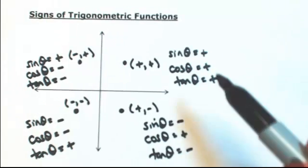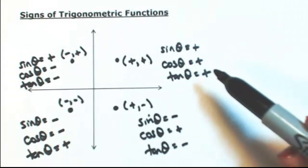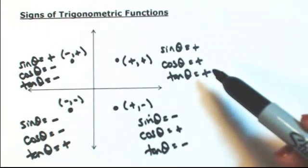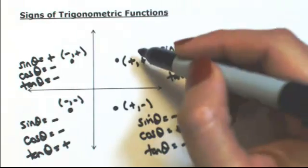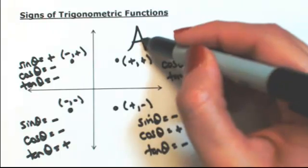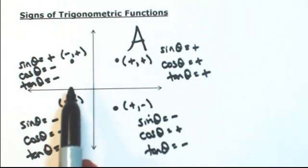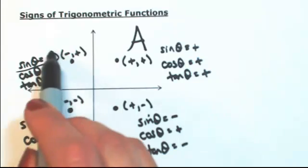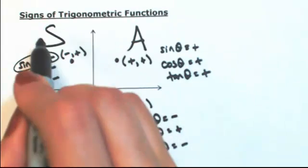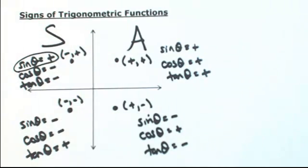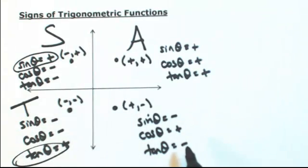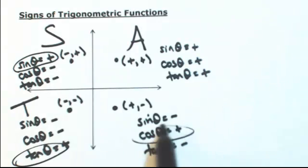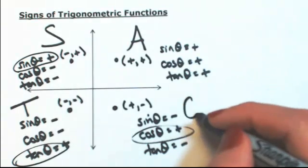Keep in mind the reciprocals follow the same pattern. To memorize this in an easier way, let's focus on what's positive in each quadrant. In the first quadrant, everything is positive — let's use A for All. In the second quadrant, only sine is positive — denote that with S. In the third quadrant, only tangent is positive — denote that with T. In the fourth quadrant, only cosine and its reciprocal are positive — denote that with C.